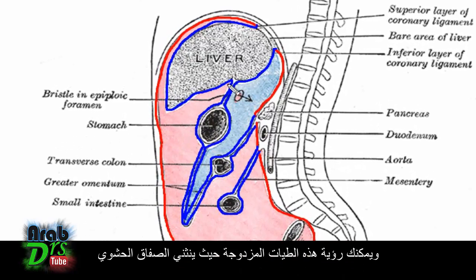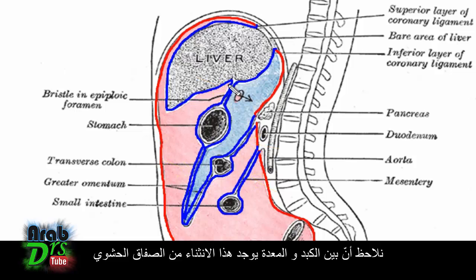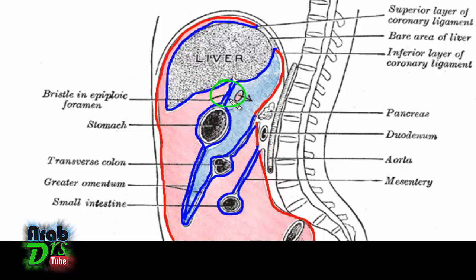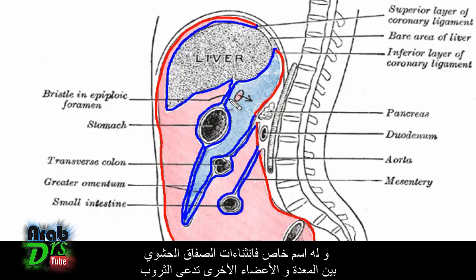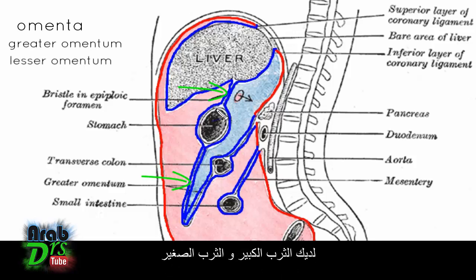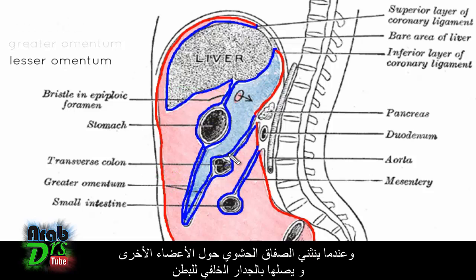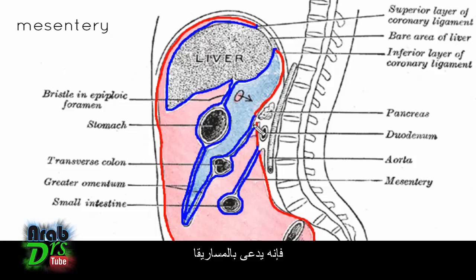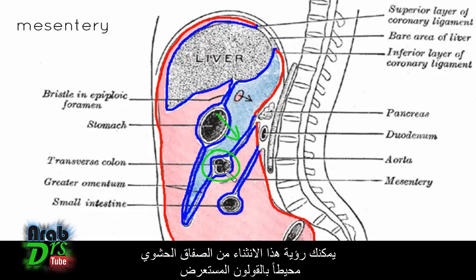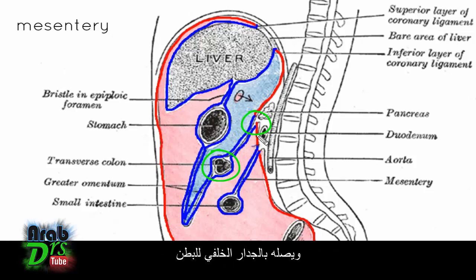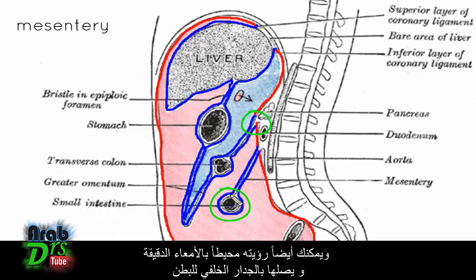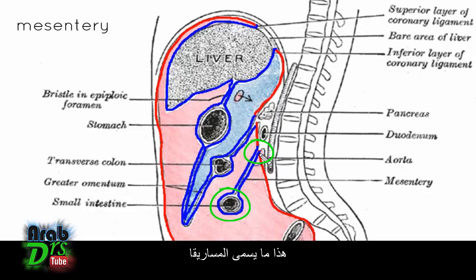There are also these double folds. Where the visceral peritoneum doubles up — for example between the liver and the stomach — it's given a special name. The doubling up of the visceral peritoneum between the stomach and other organs is called omenta, so you've got a greater omentum and a lesser omentum. Where the visceral peritoneum doubles up around other organs and attaches them to the posterior abdominal wall, it's called a mesentery. You can see this surrounding the transverse colon and the small intestine, attaching them to the posterior abdominal wall.